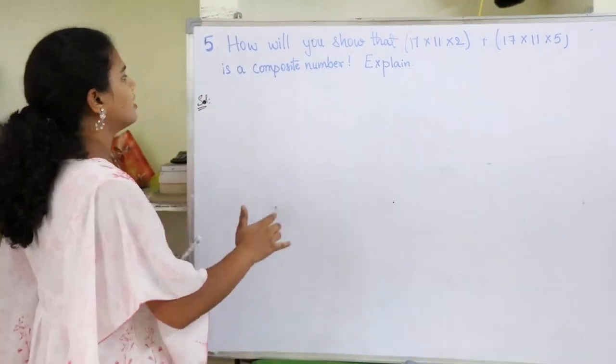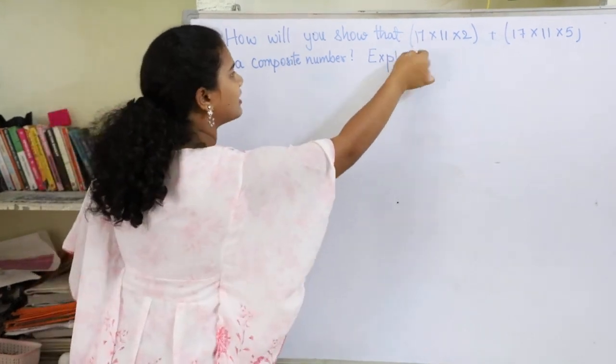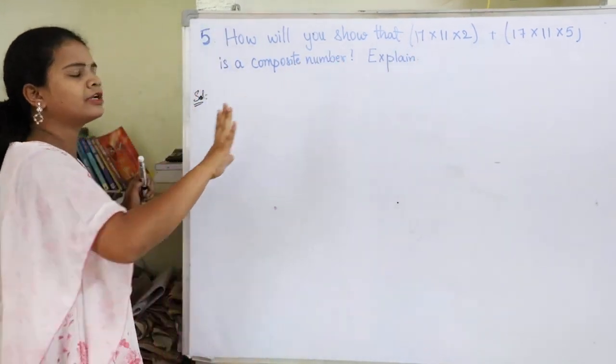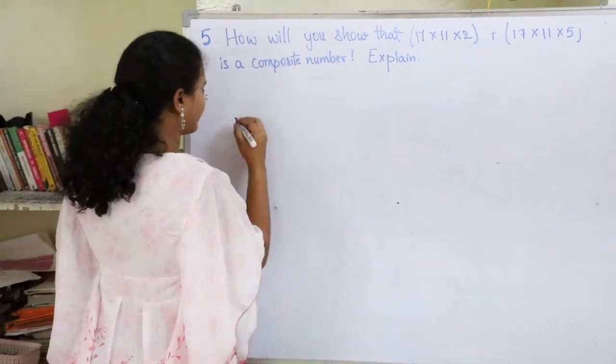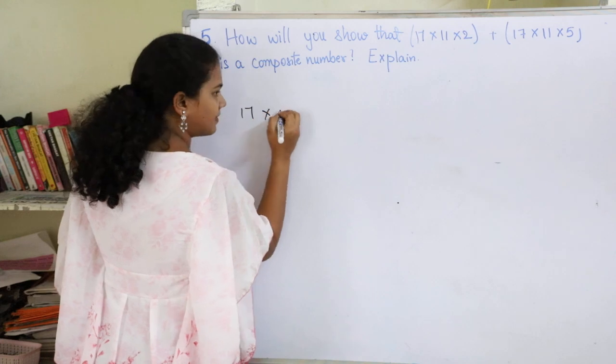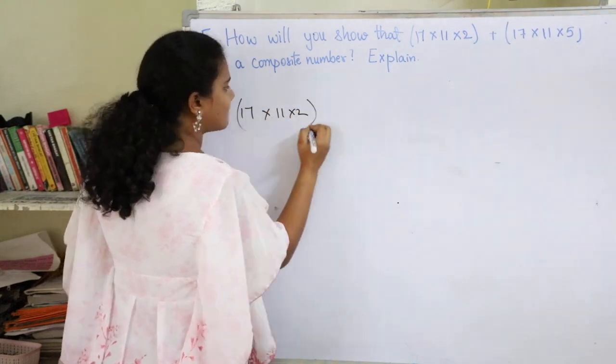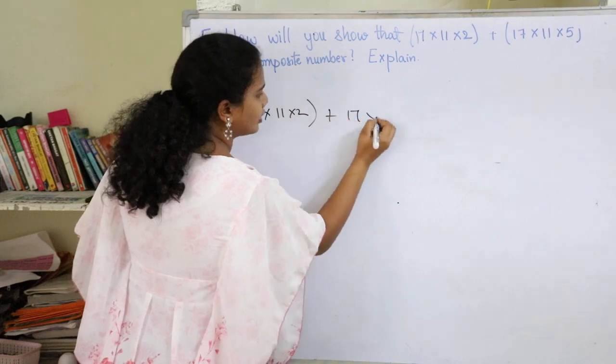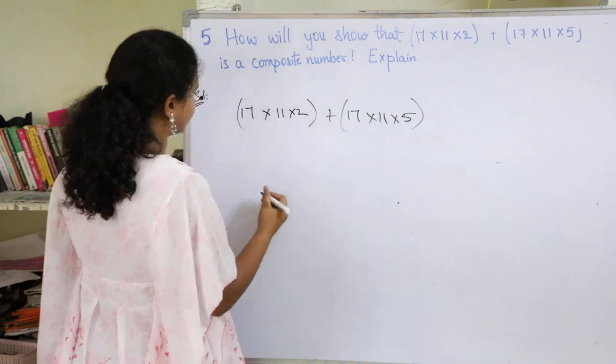So here we need to show how 17 into 11 into 2 plus 17 into 11 into 5 is a composite number. Now to show this, first let's write down the number as they have given. 17 into 11 into 2 plus 17 into 11 into 5. So this is the given question, right?